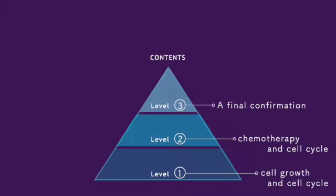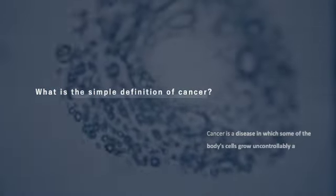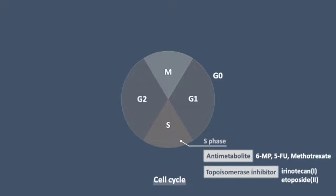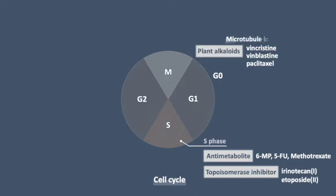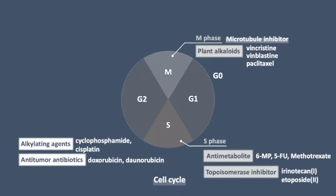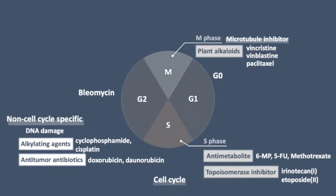Cancer is a disease caused by the uncontrolled division of abnormal cells. Antimetabolites and topoisomerase inhibitors block DNA synthesis. Compounds such as vincristine, vinblastine, and paclitaxel function as inhibitors of microtubules, disrupting the process of cell division known as mitosis. Alkylating agents and antitumor antibiotics cause direct damage to DNA, classifying them as non-cell-cycle-specific agents due to their broad impact on cells throughout various stages of the cell cycle. Interestingly, bleomycin, while categorized as an antitumor antibiotic, demonstrates selectivity by exerting toxicity primarily on cells in the M and G2 phases of the cell cycle.